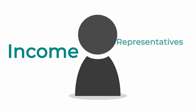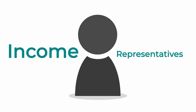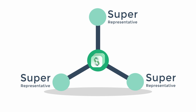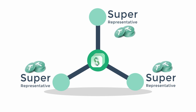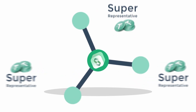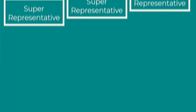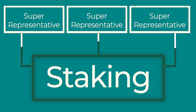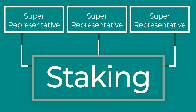Tetherscan income representatives are comprised of 3 or more super representatives, who are selected based on their financial utility and ability to provide profitability for the staking service at the current time. These super representatives directly generate income for Tetherscan staking.